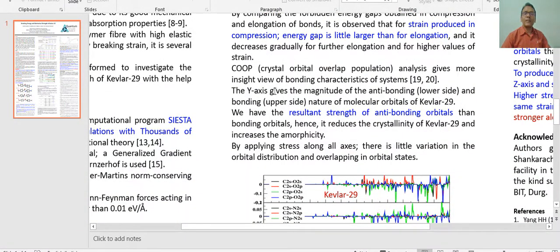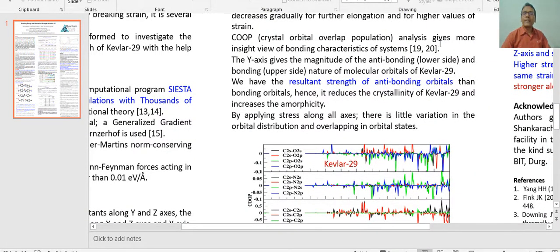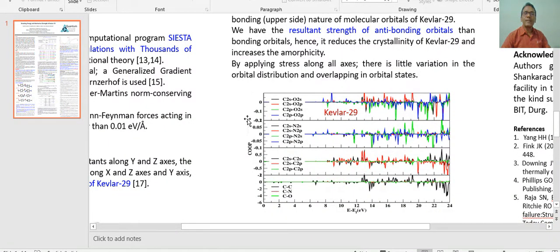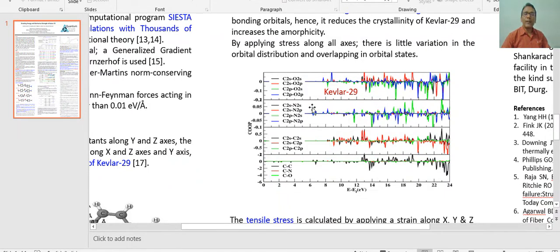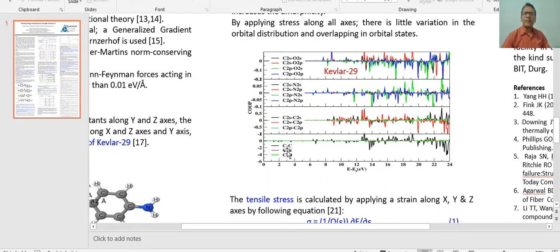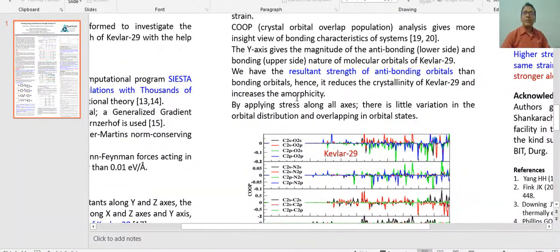We have also performed COOP analysis. This is crystal orbital overlap population, which gives more insight view of bonding characteristics of system. This is the COOP plot where the Y-axis shows the bonding and anti-bonding nature of orbitals. The upper part is bonding and the lower part is anti-bonding. The first part is actually the COOP plot of C and O sub-orbitals. This is for carbon and nitrogen, this is for carbon and carbon bonds, and this is between elements carbon and oxygen bond bonding and anti-bonding. By observing this plot, we can say we have the resultant strength of anti-bonding orbitals than bonding orbitals, and it reduces the crystallinity of Kevlar 29 and increases its amorphicity and tensile strength.